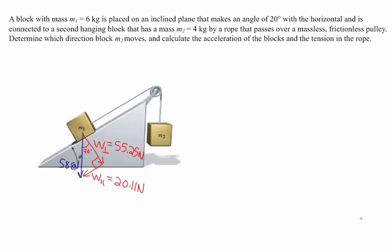Because block M1 is sliding along the ramp, the forces perpendicular to the ramp must balance. The only other force perpendicular to the ramp is the normal force, which must balance out the perpendicular component of the weight — so the normal force is 55.25 Newtons. There's also the tension in the rope pulling up the incline. For block M2, its weight is 4 kg times 9.8 m/s², which is 39.2 Newtons, with the tension in the rope pulling upward.